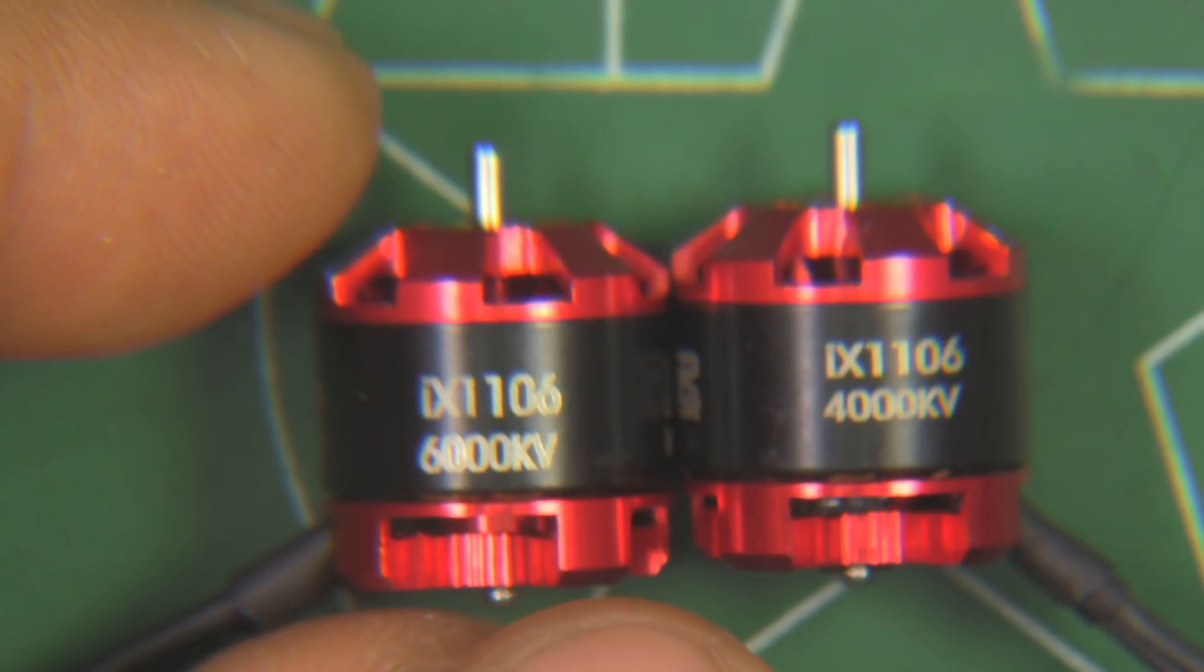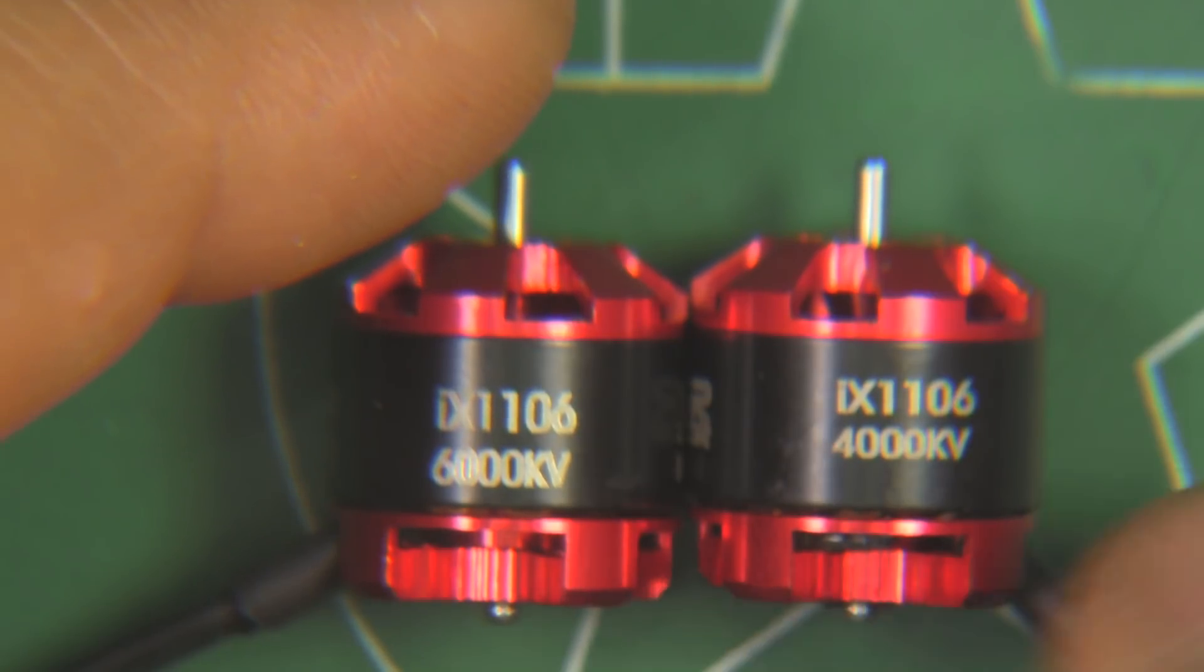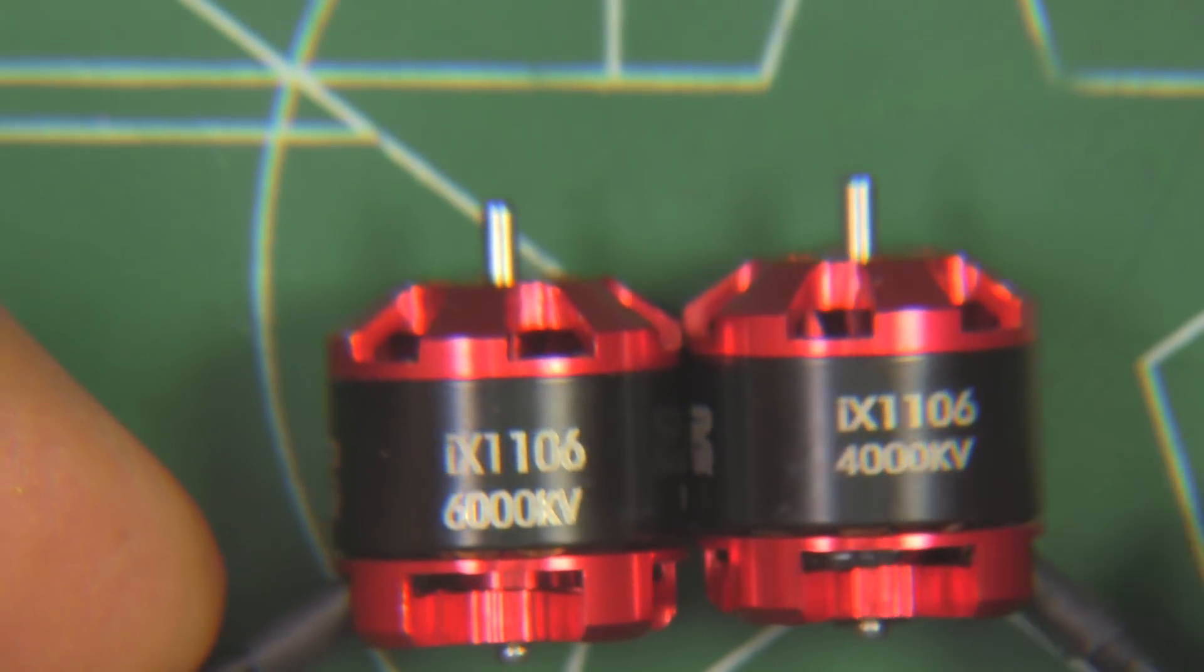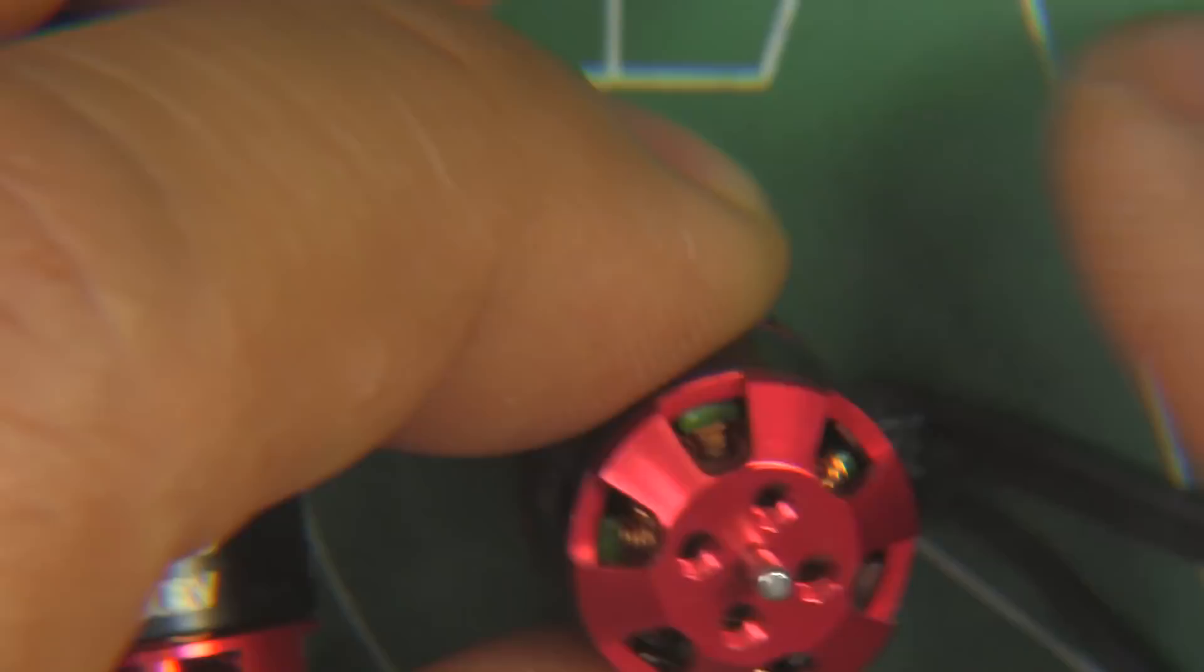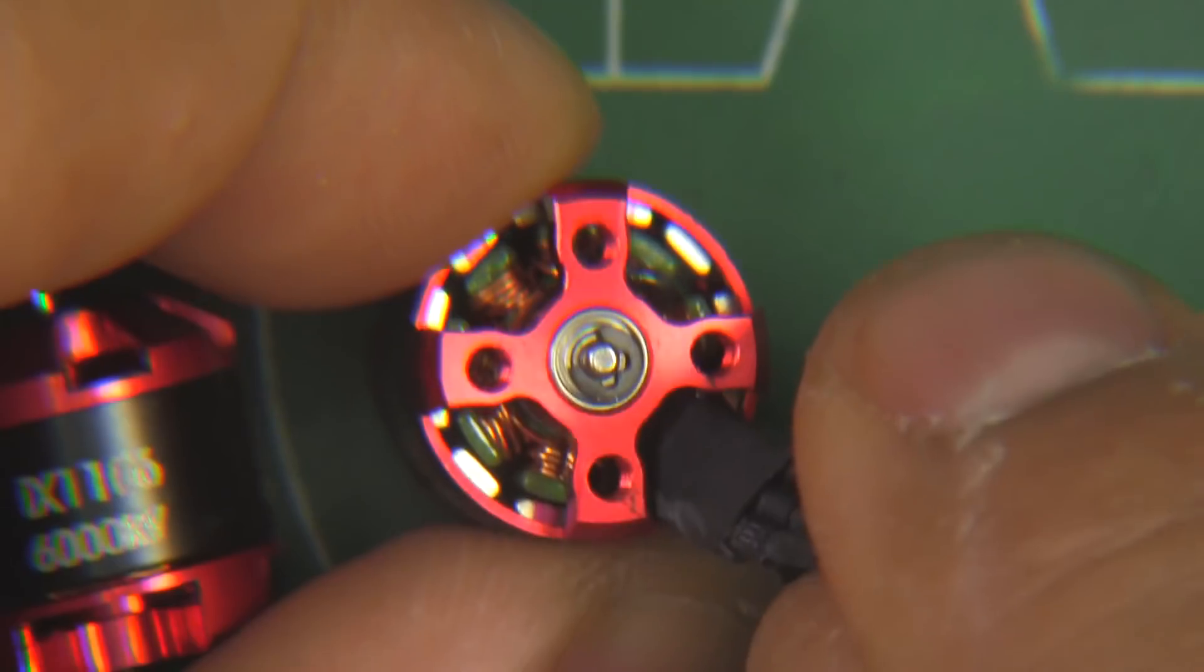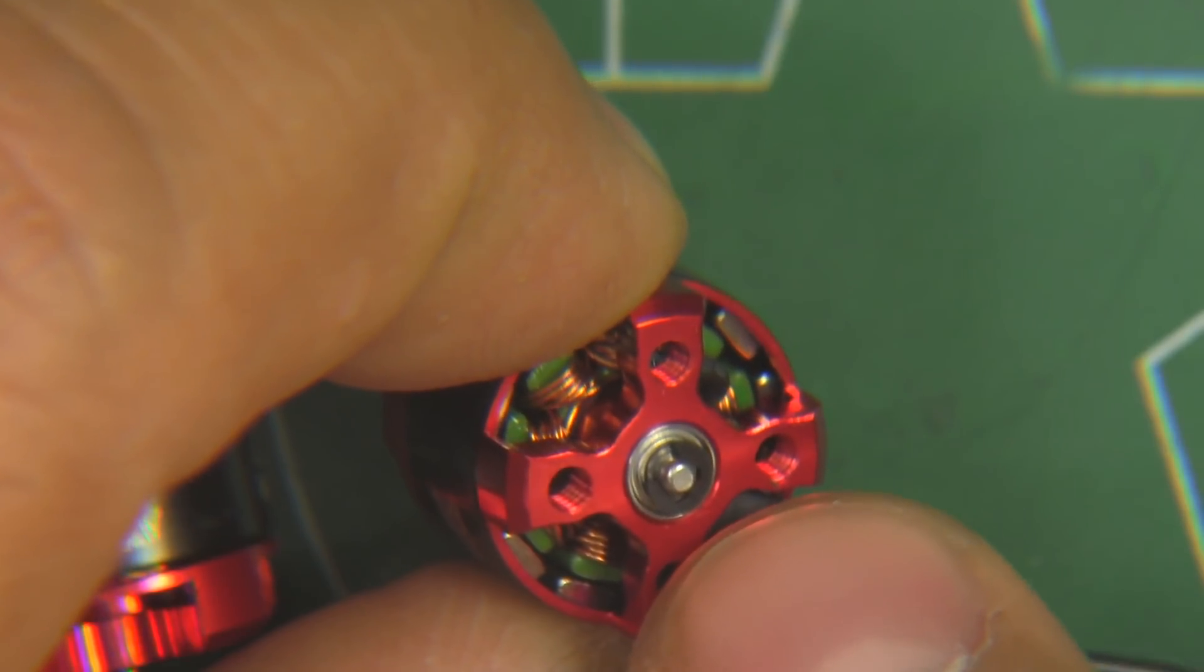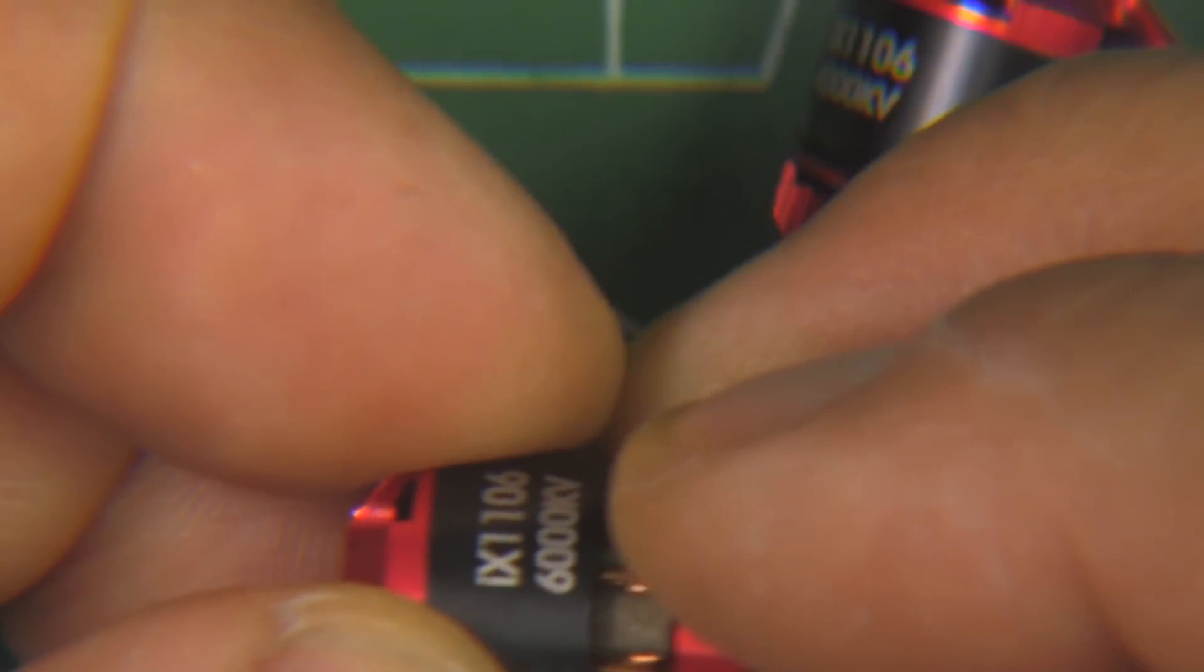So here are both motors, 6000 kV and 4000 kV. The build on the motors is pretty standard, nothing out of the ordinary. They got just the standard 1.5mm shaft all through, and it's being retained by a standard E-clip at the bottom, pretty easy to remove. So the bell comes apart pretty easily.